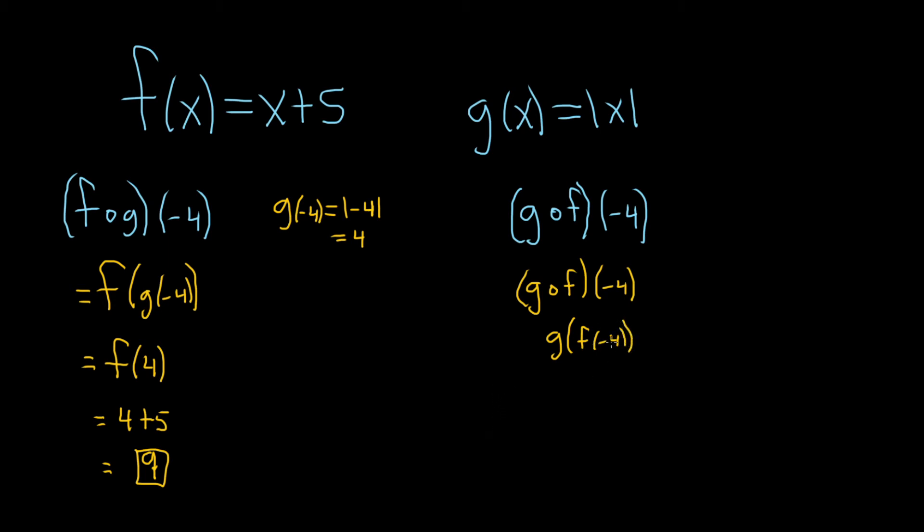So just like before, we'll go to the side and we'll work out this piece here, this f of negative 4. So f of negative 4. So that means we replace x here with negative 4. So it'll be negative 4 plus 5. So that's 1.